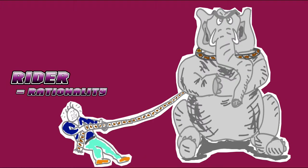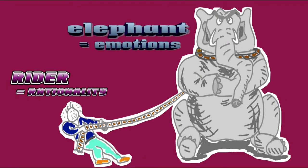The rider is your rational side and the elephant is your emotional side. The puny rider thinks he is in charge, but only till the point the elephant agrees. If the elephant disagrees about which direction they should go, there is very little the rider can do.